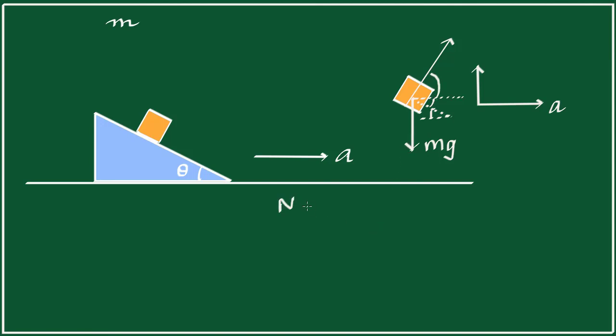So we have N sin theta is the horizontal component of the normal reaction. And that is equal to mass of the block times the acceleration. Because it is moving now with the wedge, it has the same acceleration as the wedge.